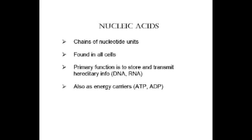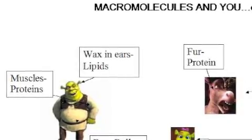Our final compound of life is the nucleic acid. The monomer for that is a nucleotide, and this is found in every single cell. Its primary function is for it to store and transmit the hereditary information in DNA and RNA, but it's also one of our energy carriers with ATP and ADP.